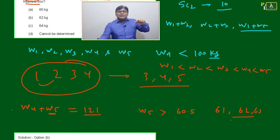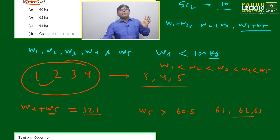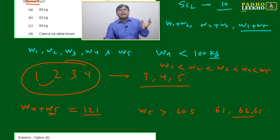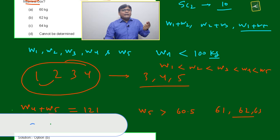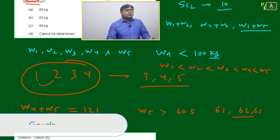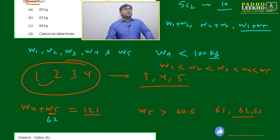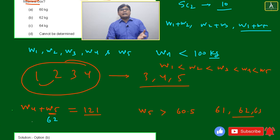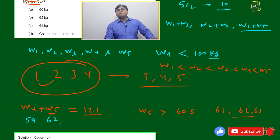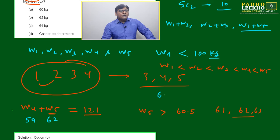If we take too high a value for w5, we won't be able to match all the consecutive pairwise sums. The best option is w5 = 62. If w5 = 62, then w4 = 121 − 62 = 59. So we get two values: w5 = 62 and w4 = 59.